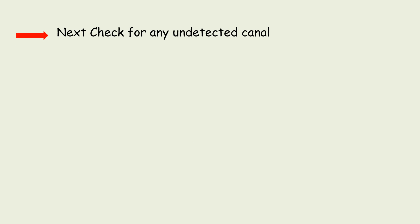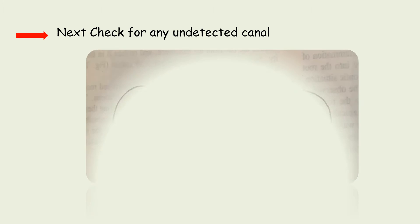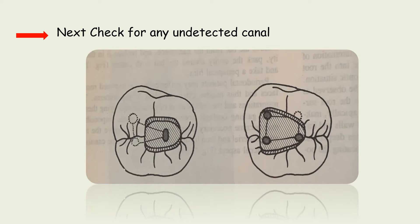If there is no perforation on the floor of the pulp chamber, our next step would be to check for any undetected canal. Now observe this is the mandibular first molar. In the first case, there are two undetected canals. And in the second case, all three canals have been identified but a fourth canal was not identified. So in such cases, because the canals were not identified, pulpal remnants are present and it causes pain to the patient. So we have to modify our access cavity.